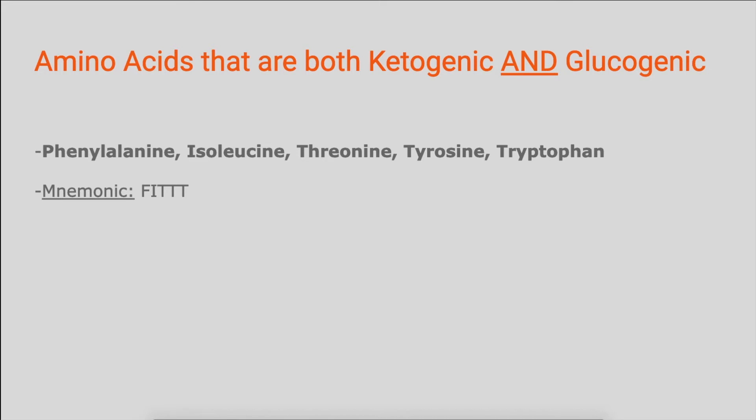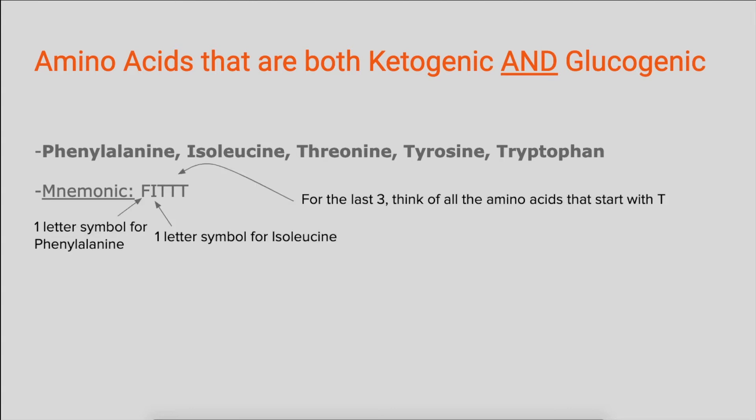A helpful mnemonic to remember these is F-I-T-T-T. The F is the one-letter symbol for phenylalanine, the I is the one-letter symbol for isoleucine, and the remaining three you can remember by listing all of the amino acids that start with the letter T: threonine, tyrosine, and tryptophan.